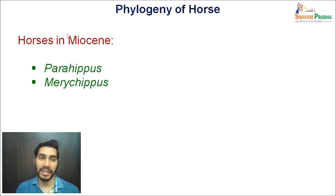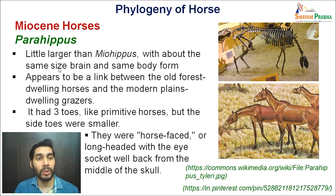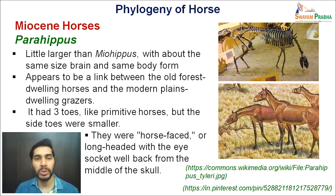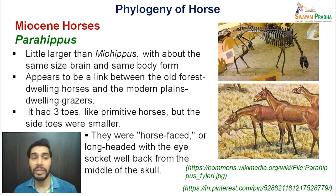Moving ahead to the next epoch, the Miocene, we will discuss two main types: Parahippus and Merychippus. Parahippus was slightly larger than Miohippus, with about the same brain size and overall body form. This Parahippus appears to be a link between the old forest-dwelling horses and the modern plain-dwelling grazers. As noted, there has been an evolutionary trend from browsers to grazers, and Parahippus appears to be the intermediate or linking form between these two.